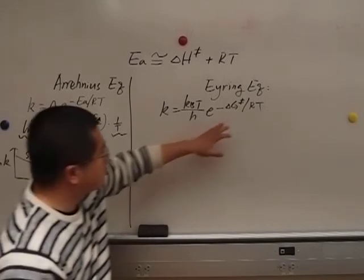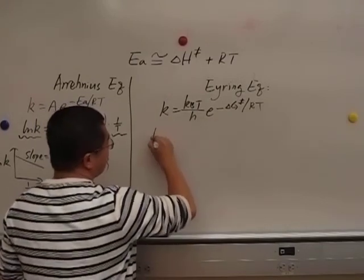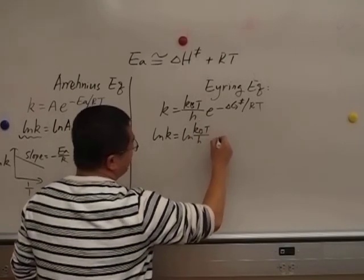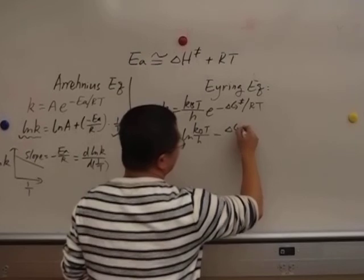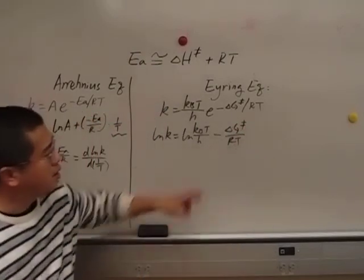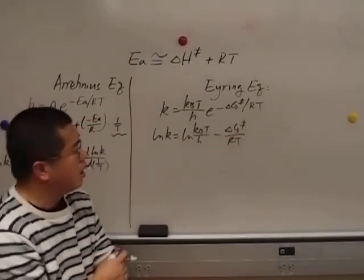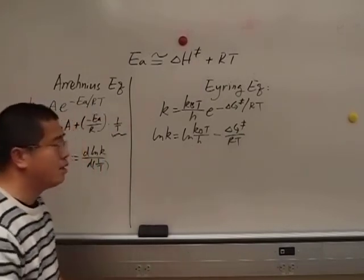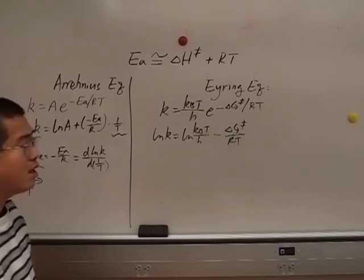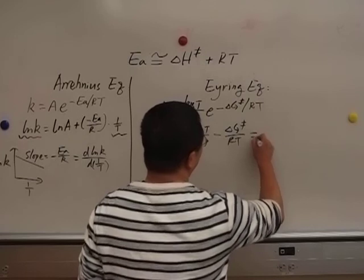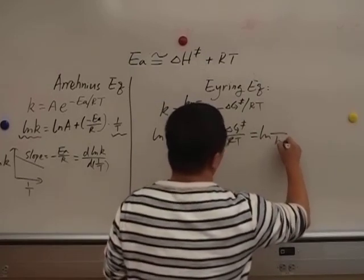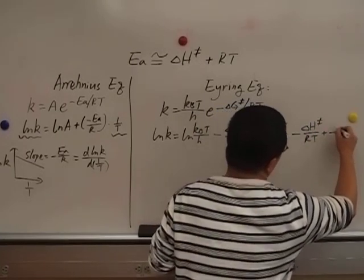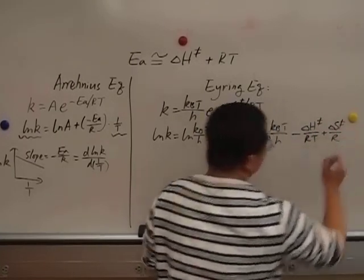Similarly we'll take the logarithm of the Eyring equation. Ln K equals ln(kBT over h) minus ΔG double dagger over RT. However, this ΔG is dependent on temperature, and we'll have to assume ΔH and ΔS are independent of the temperature, and then we can write this equation a little differently.